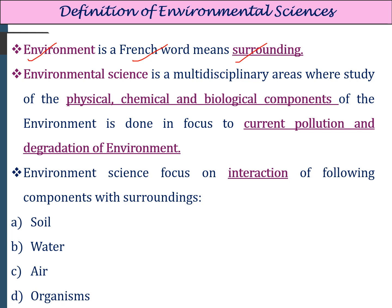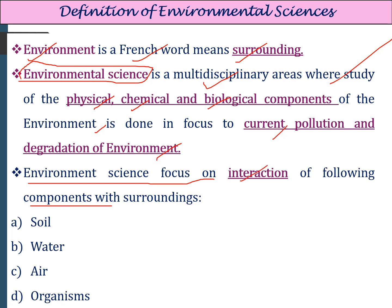Then, what is environmental science? Environmental science is a multidisciplinary area of study where we read about the physical, chemical, and biological components of the environment, with focus on current pollution and degradation of the environment. Environmental science focuses on the interactions between components of the surrounding — soil, water, air, and other organisms.